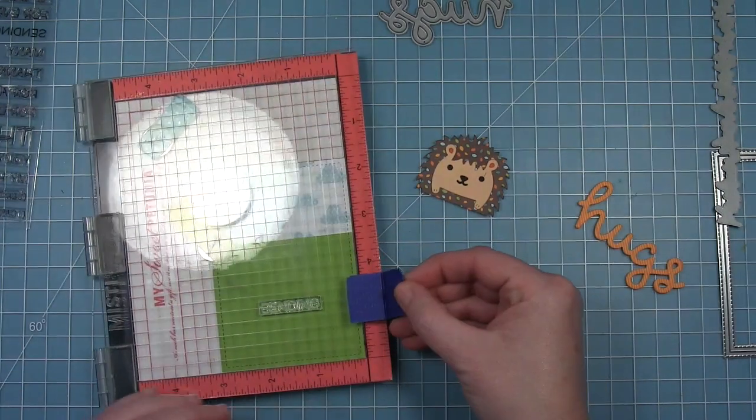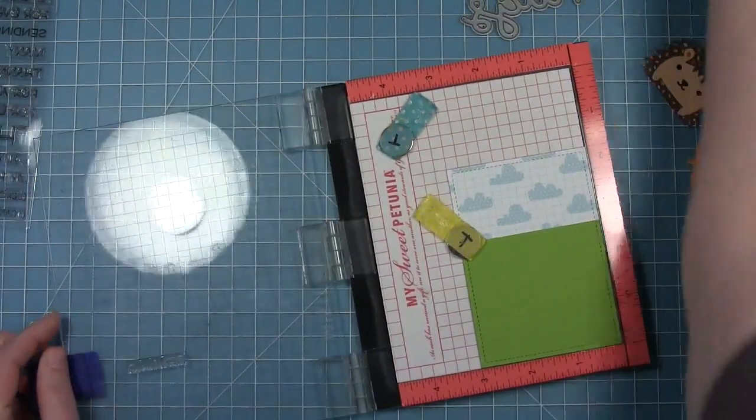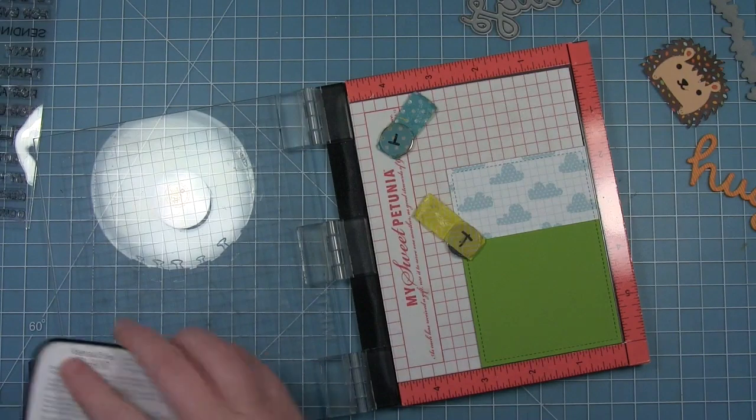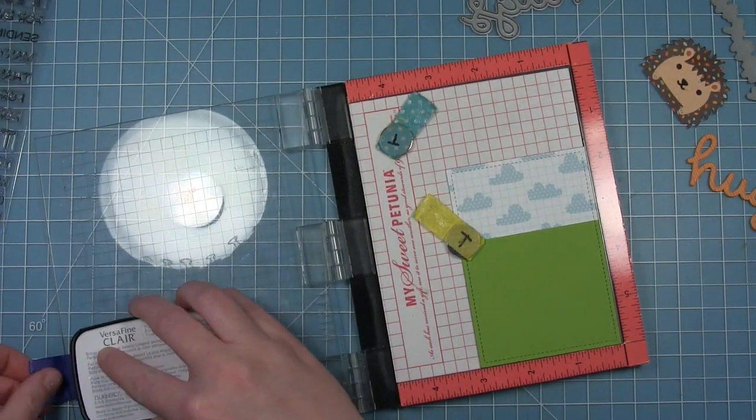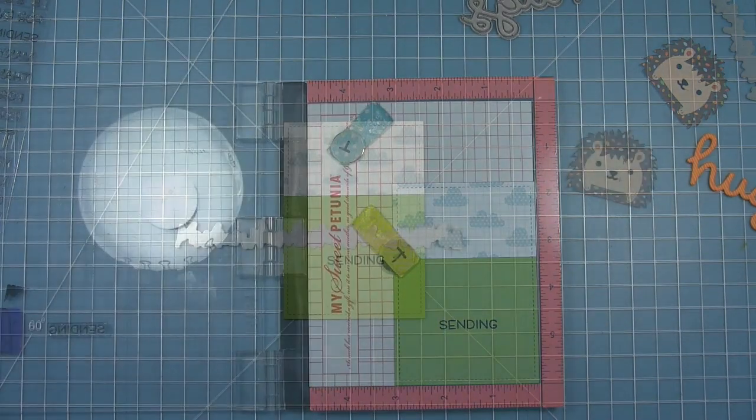I'm also going to use the sending from the thanks thanks thanks so that our sentiment says sending hugs. I have a piece of cilantro cardstock cut with a stitch rectangle that's going to be some grass on the bottom. I'm going to go ahead and stamp this and figure out where my sentiment is before I cut that grassy border, so that I make sure that my alignment is good and I've got enough space.